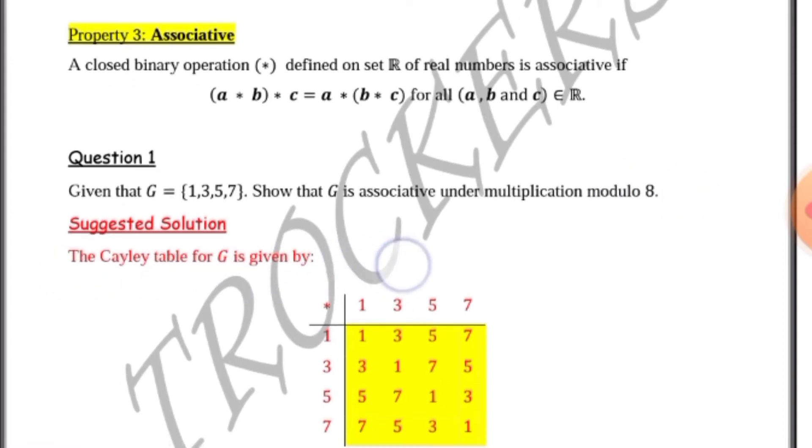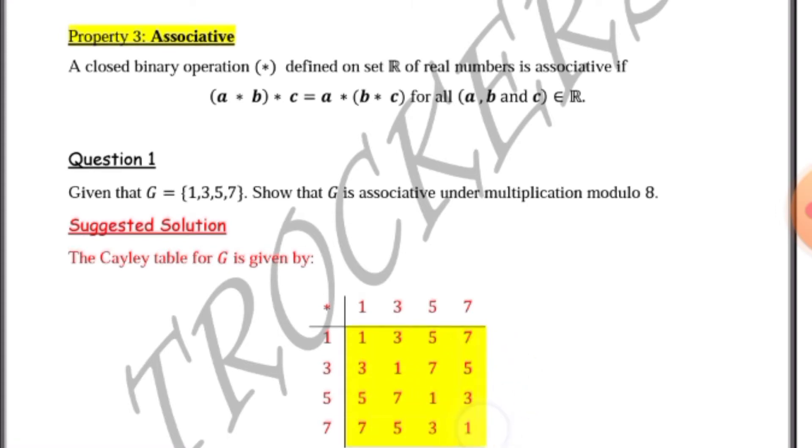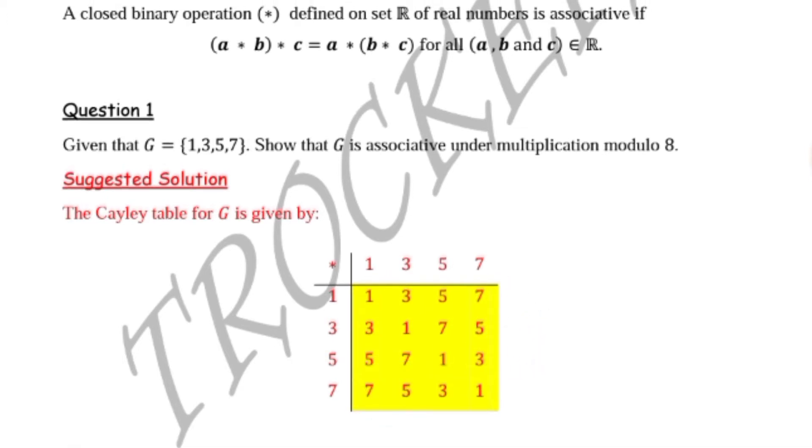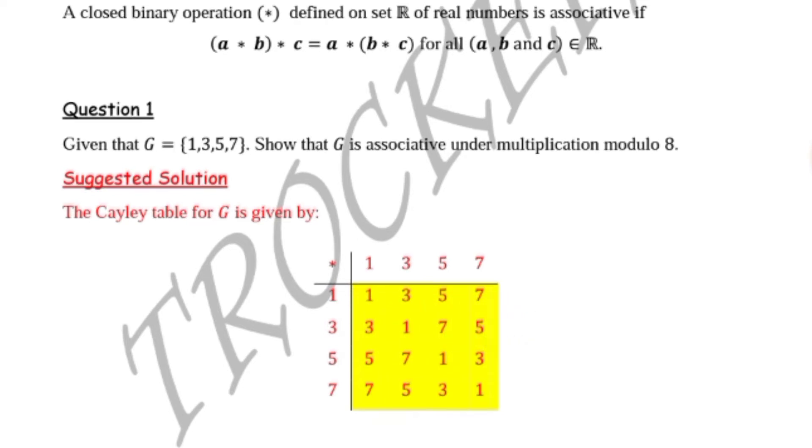We make use of the Cayley table in this case. By now you should be familiar with how to construct the Cayley table and get these values under multiplication modulo 8. These are the remainders after multiplying the numbers and dividing by 8. If you're not getting it, you can watch my previous videos. I'll put the links in the description.